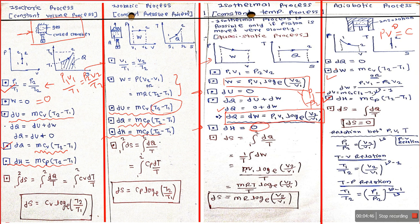For the adiabatic process, dQ is zero. Remember which parameter is zero for each process: for isochoric, work done is zero; for isobaric, no parameter is zero; for isothermal, change in enthalpy and change in internal energy are zero; for adiabatic, both entropy and heat (dQ) are zero — because entropy is the integral of dQ/T, and since dQ is zero, there is no change in entropy. Also remember the pv, tv, and tp relations for adiabatic — don't miss the sequence. These formulas for change in entropy for each process will be revisited in the third topic when discussing entropy numericals.